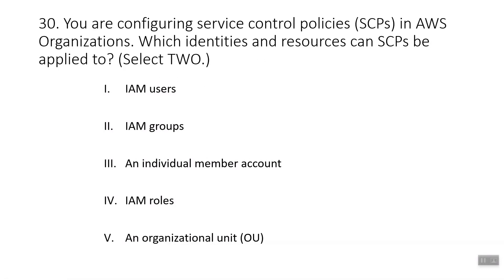Question thirty: you are configuring Service Control Policies (SCPs) in AWS Organizations. Which identities and resources can SCPs be applied to? Select two. The answers are an individual member account and an organizational unit (OU). You can attach SCPs to the organization root, OUs, and individual accounts, and they apply to all OUs and accounts within them.